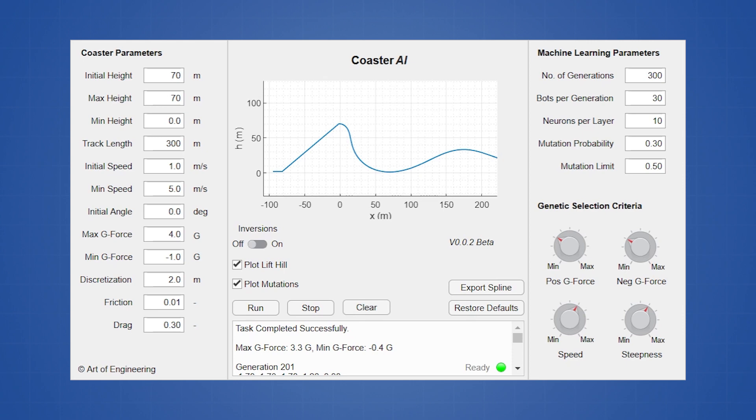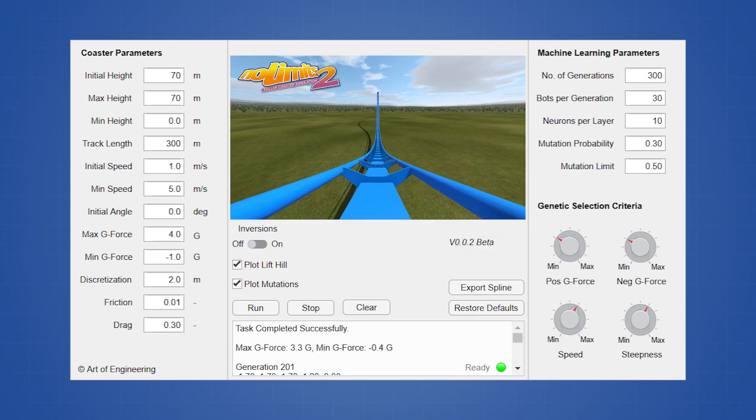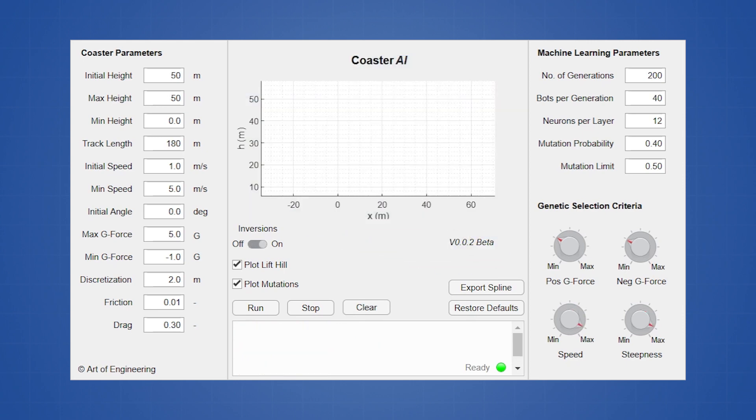If we are satisfied with the design, then the spline can be exported to other rollercoaster modeling software such as No Limits, or we can discard it and try running the program again. I'm going to put a download link for Coaster AI in the description for anyone that wants to try it out, and I'm also going to include a simplified version that can run directly in MATLAB, as well as a printout of the script for anyone that just wants to see what the code looks like.